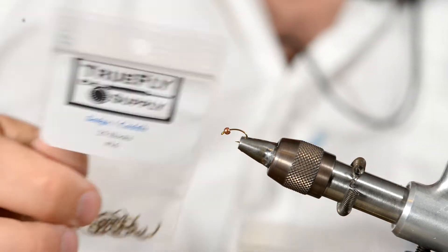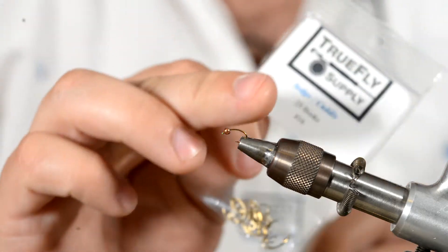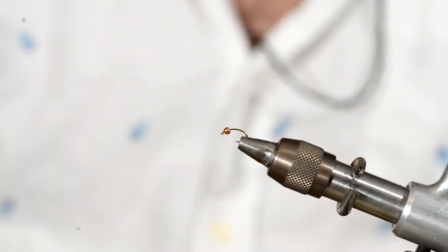So we're gonna get started here. For this fly, take your hooks and your beads, and put a bead on your hook and put it in the vise.